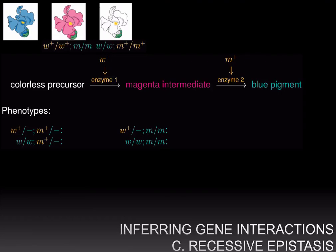Let us continue our discussion of different types of gene interactions and how to diagnose those interactions by looking at the phenotypic ratios in the progeny from a dihybrid cross.